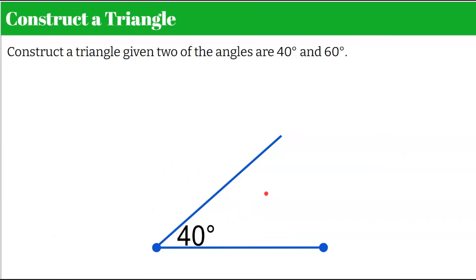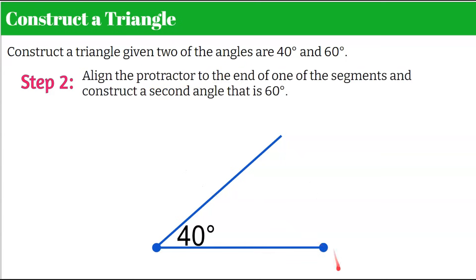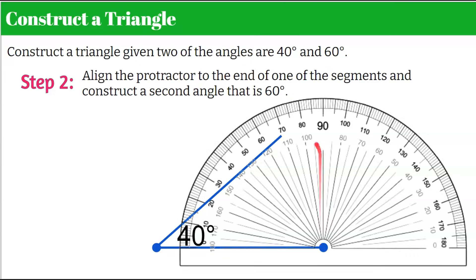Step two: I'm going to add an endpoint to my line segment to make my next vertex and align the protractor to the end of one of the segments. Now I'm constructing a 60 degree angle, so I'm going to be on the outside of the protractor coming from the left. Going 10, 20, 30, 40, 50 — here's my 60. I'll make a little mark, connect my line down to my vertex, and label my angle 60 degrees. That's really important because once you construct it you could forget what you just did.